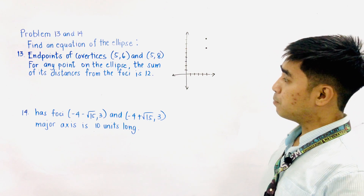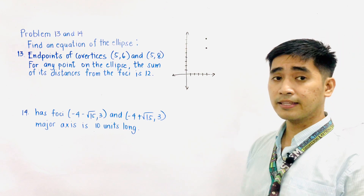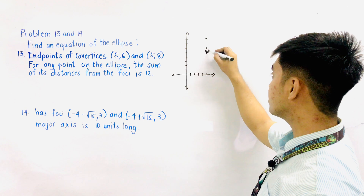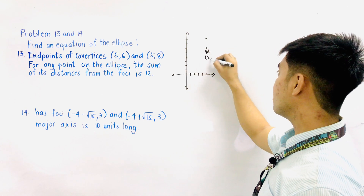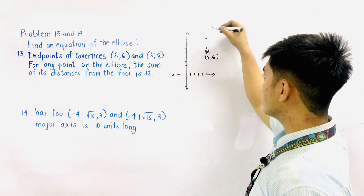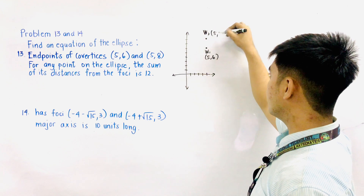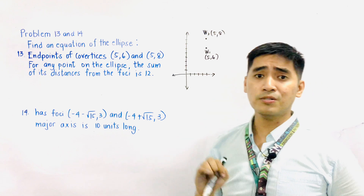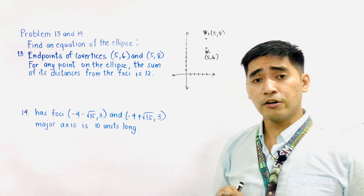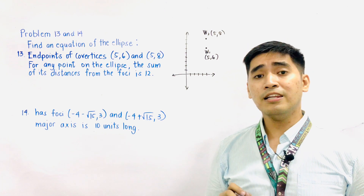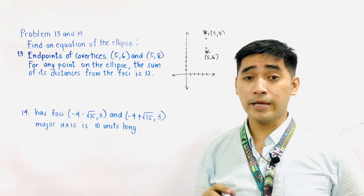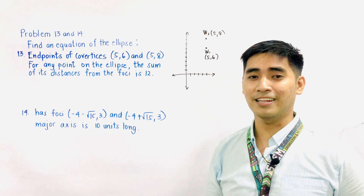We are given endpoints of co-vertices (5, 6) and (5, 8). Let us first graph (5, 6) — this is co-vertex W1 located at (5, 6). And another endpoint is (5, 8) — this is W2 located at (5, 8). Always remember that if you are given the foci, the endpoints of co-vertices, or the endpoints of vertices, to find the center you just need to get the midpoint. The midpoint will serve as the center of the ellipse.